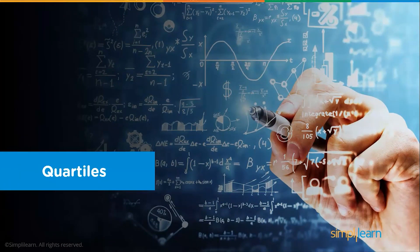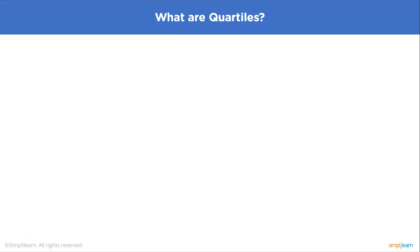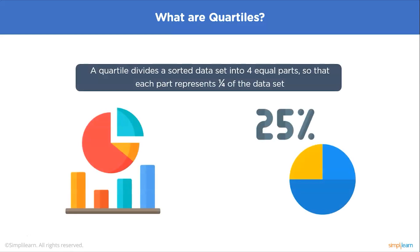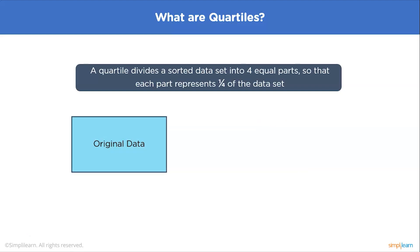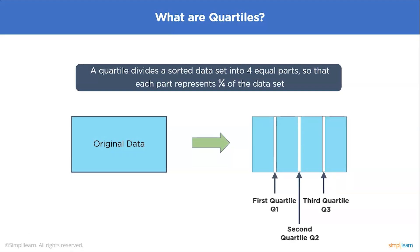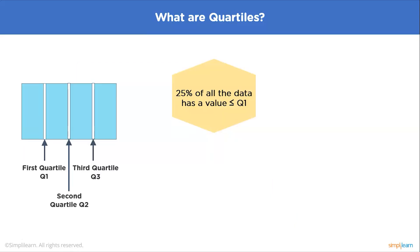Now that we've discussed percentiles, let's move on to quartiles. A quartile is a statistical term that divides the data into four quarters on the number line. Q1, also called the first quartile, represents the 25th percentile of the data set. Q2, the second quartile, represents the 50th percentile, and Q3, the third quartile, represents the 75th percentile. Q1 is also called the lower quartile and Q3 the upper quartile.